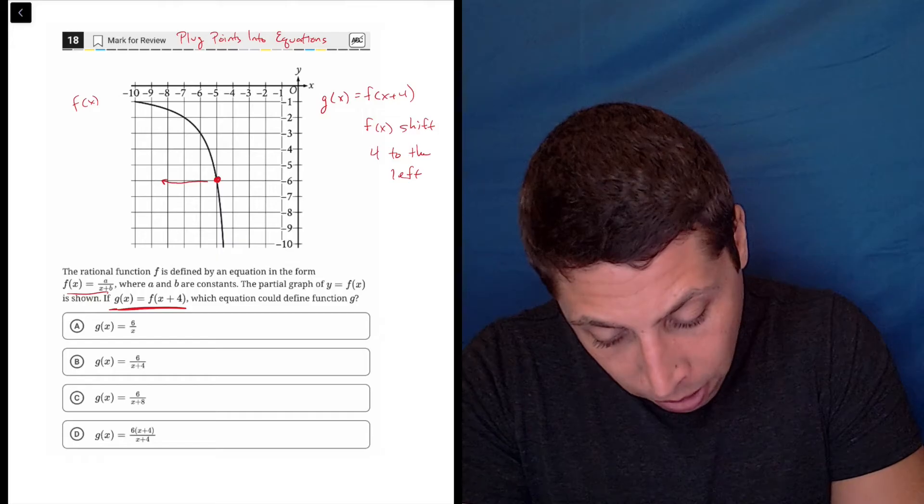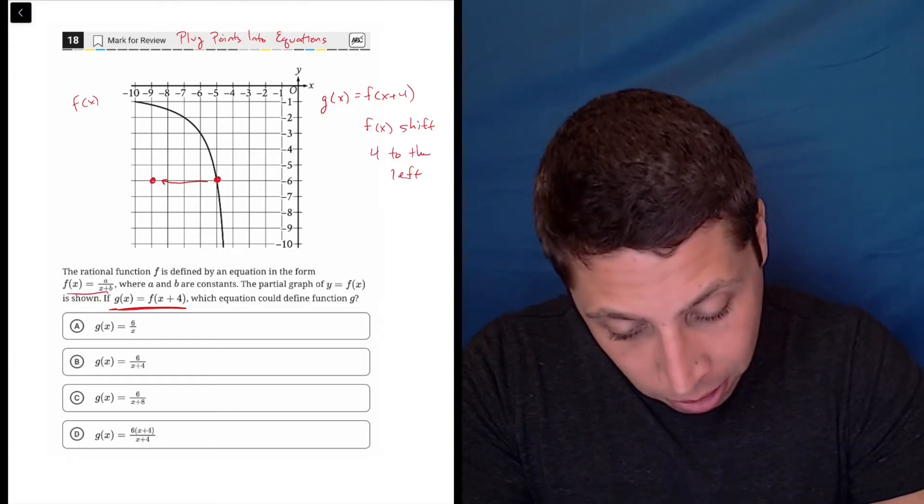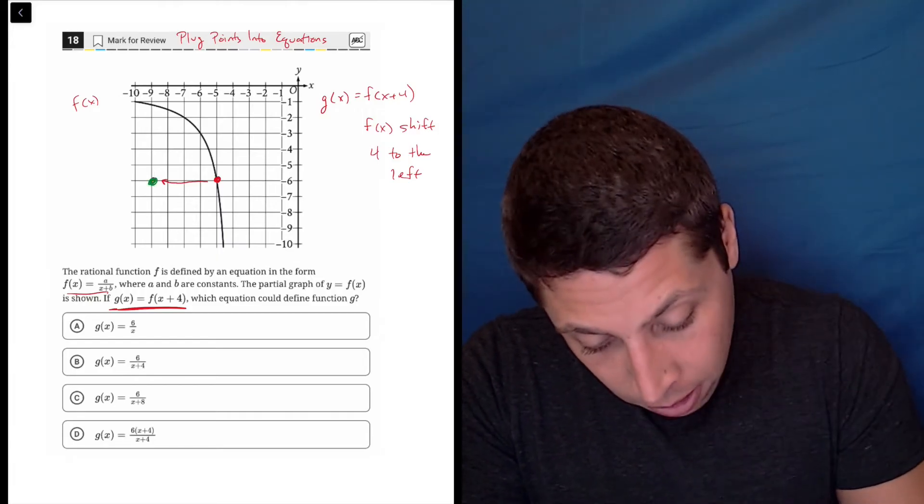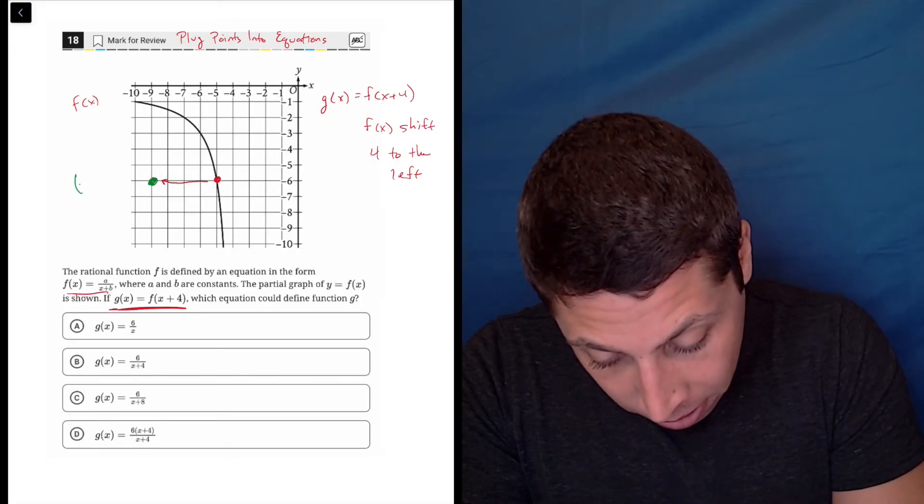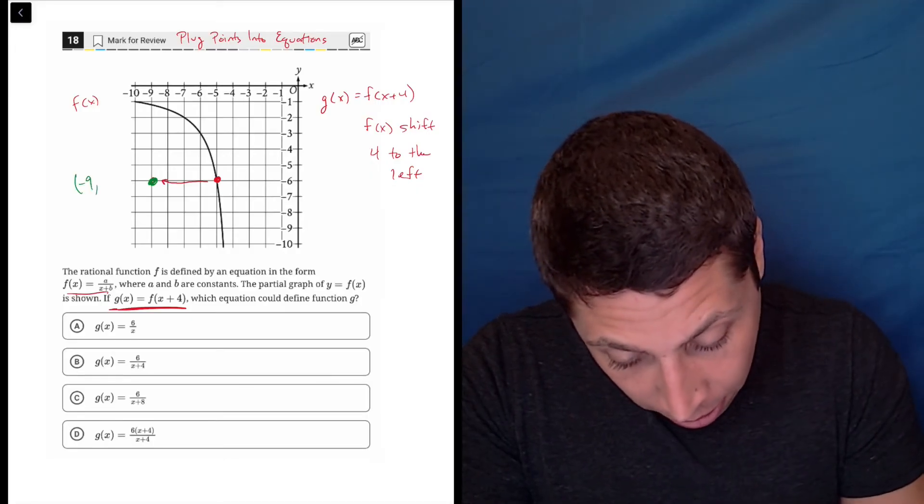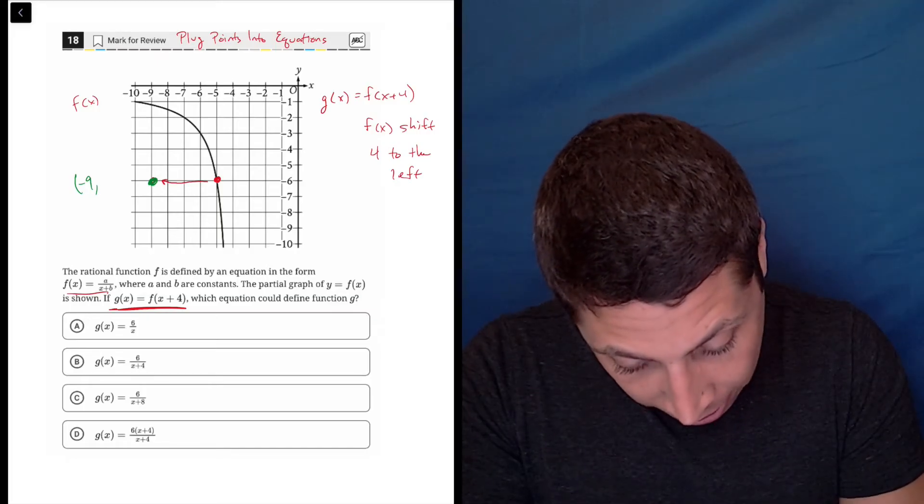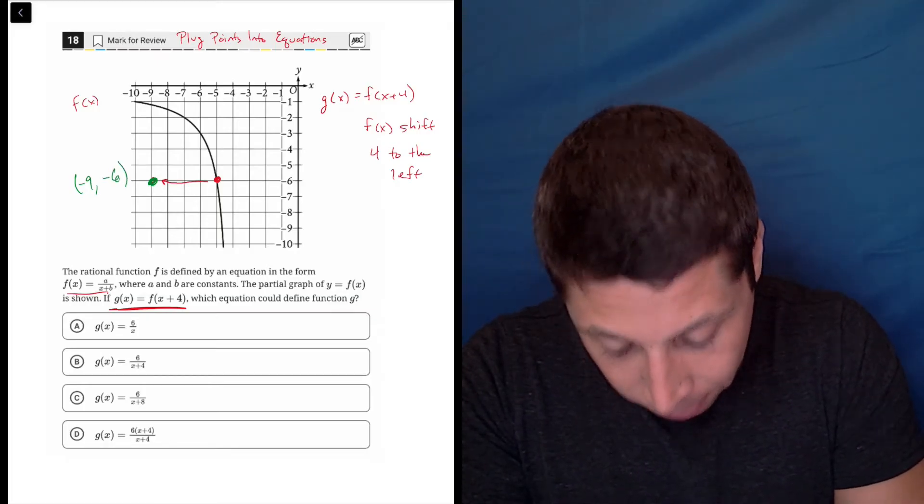So one, two, three, four gets me here. Actually, let's use a different color for the g. The g will be this green, and that is now the point, negative nine, negative six.